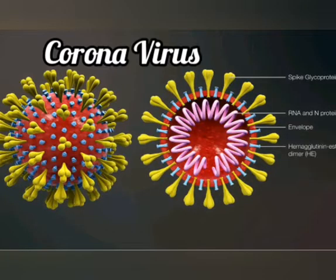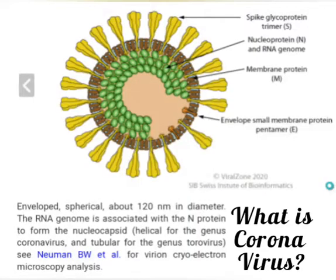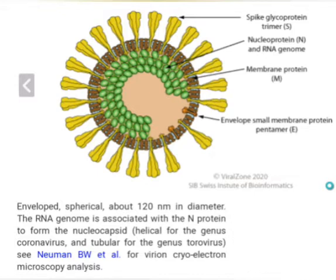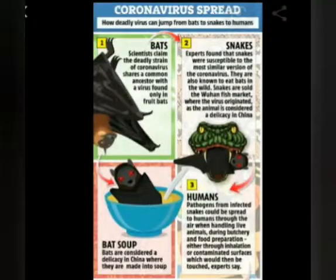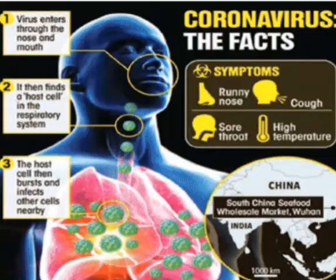Today my topic is about coronavirus. First of all, we talk about what is coronavirus. The name of this kind of virus comes from the crown-like spikes it has on its surface — 'corona' is Latin for crown. Coronavirus is a large group of viruses that infect mostly bats, pets, and small mammals.